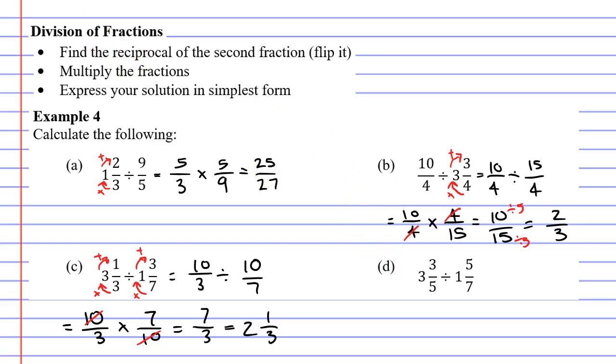Now moving on to question D. Once again, we just convert our mixed numerals to improper fractions. We do this by multiplying and then adding. Focusing on the first fraction, 5 times 3 is 15 and 15 plus 3 is 18. So our numerator is 18 and our denominator stays the same. It stays as 5.